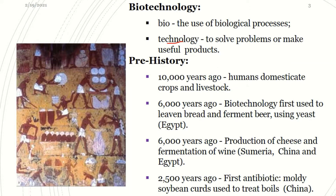Biotechnology comes from two words: bio and technology. Bio refers to the use of biological processes and systems, while technology is the process where we solve problems or make useful products. So we are going to make useful products from biological systems.